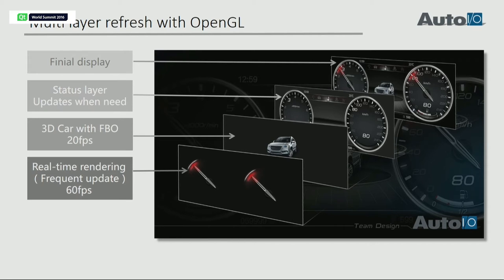This is multi-layer refresh with OpenGL. The front end is a real-time reading with frequent updates — for example, the meter needle, which we can update at 30 FPS. Behind it, a 3D car model rendered with FBO can use 20 FPS. This way we can reduce the GPU payload and get smoother RPM and speed display.